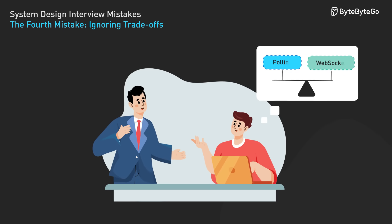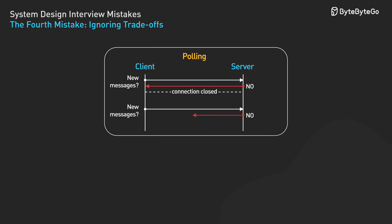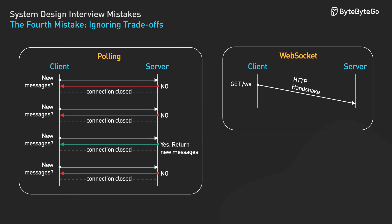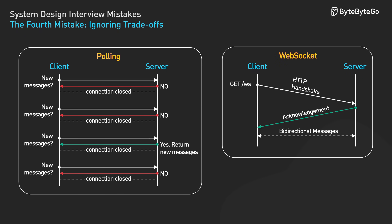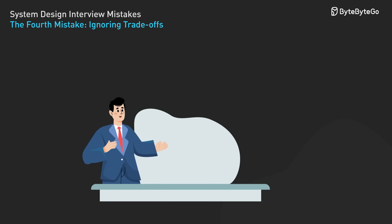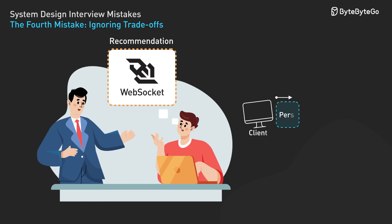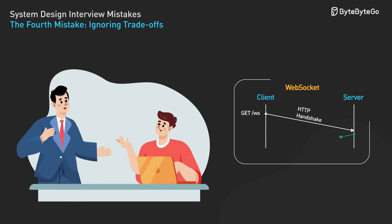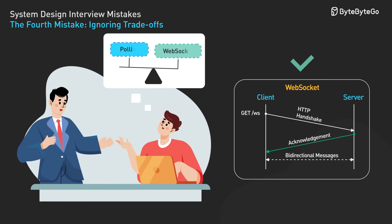The fix: always discuss trade-offs. Present multiple options. For message delivery, we have two main approaches: HTTP polling is simple and works through firewalls and proxies easily; WebSocket provides true real-time communication with low latency. Explain the trade-offs — HTTP polling is simpler to implement but wastes resources with frequent requests. WebSocket provides real-time communication with minimal overhead, but requires handling persistent connections and is more difficult to scale. Make a recommendation: given our requirements for real-time chat with potentially thousands of concurrent users, I will choose WebSocket. This shows you understand that engineering is about making informed choices between competing priorities.